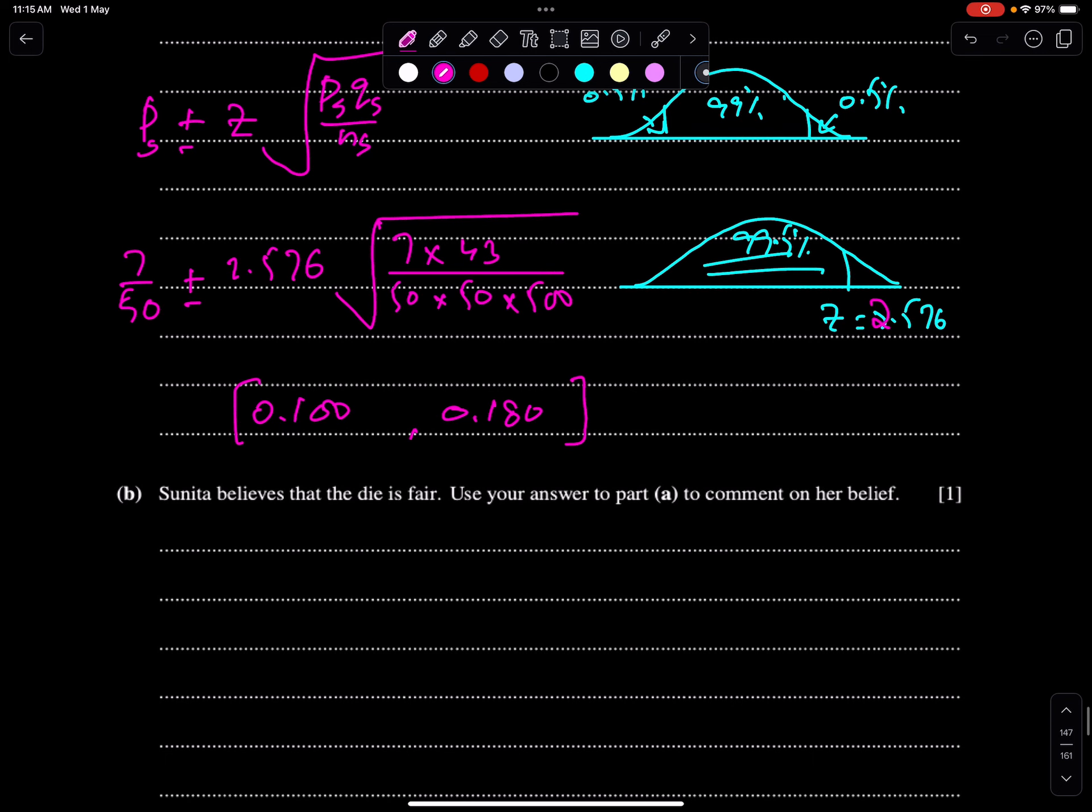Next point. Sunita believes that the die is fair. Use your answer to point A to comment on her belief. Fair die means the probability of all numbers should be 1 upon 6. Probability of any number, let's suppose probability of 3, 1 upon 6.